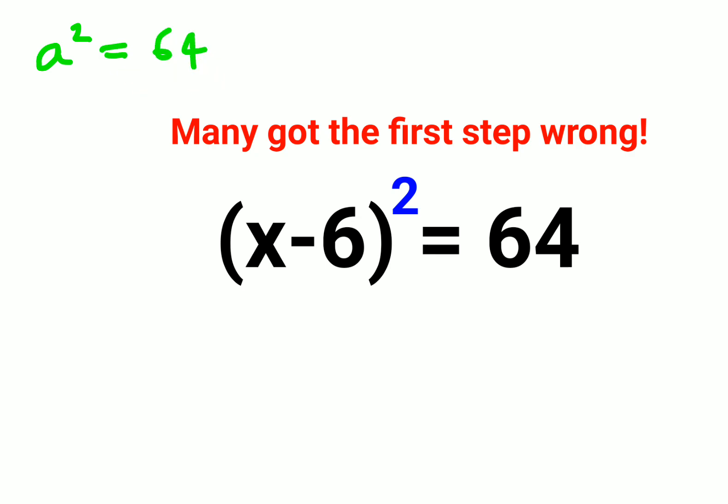Now in order to find the value of a, what you need to do is we'll take square roots on both sides. Now please understand, whenever there's a variable involved and you're taking a square root, at that time you will have to add a plus minus sign.